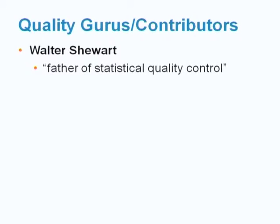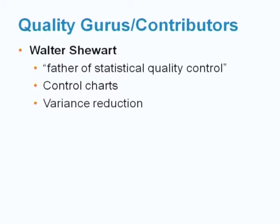Quality gurus or quality contributors — in this topic we will describe some of their key contributions to the fields of quality. The first one is Walter Shewhart. Walter Shewhart is named the father of statistics for quality control. He created the control chart and created the concept of the variance reduction program.